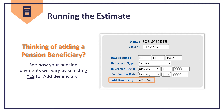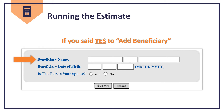If you're planning to add a beneficiary, click Yes. Note that this information is not taken from your MBOS account. You'll need to provide their full name, date of birth, and answer whether or not this person is your spouse. Then click Submit.